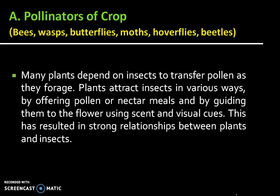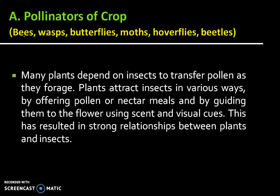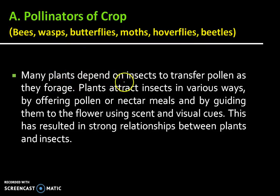The beneficial insects are categorized under the following heads. The first category is pollinators of crops, which include bees, wasps, butterflies, moths, hoverflies, and beetles. Many plants depend on insects to transfer pollen as they forage.